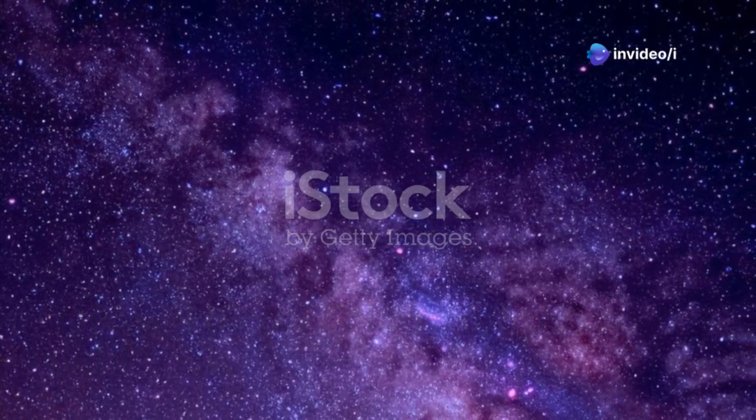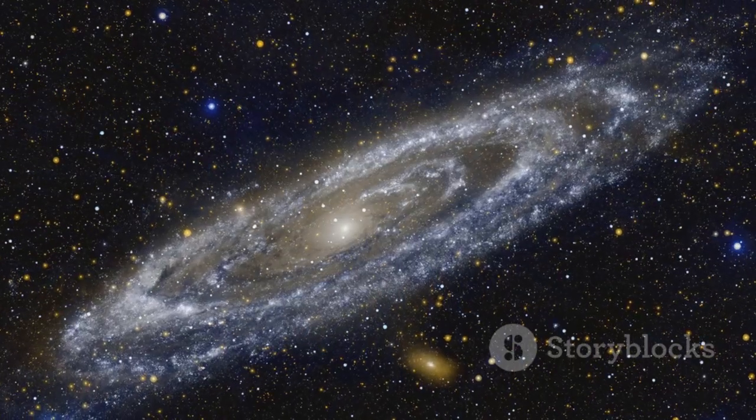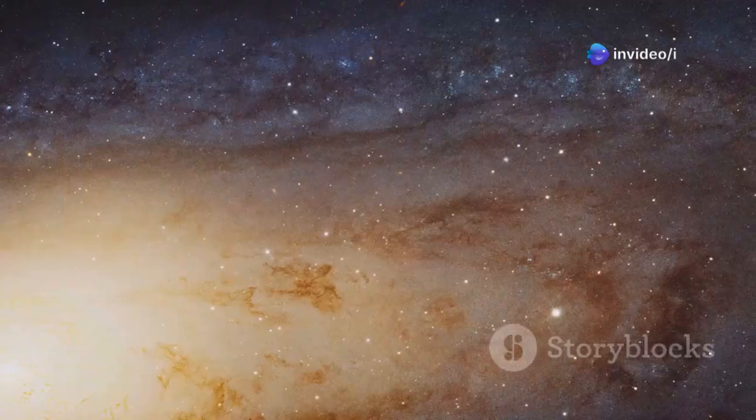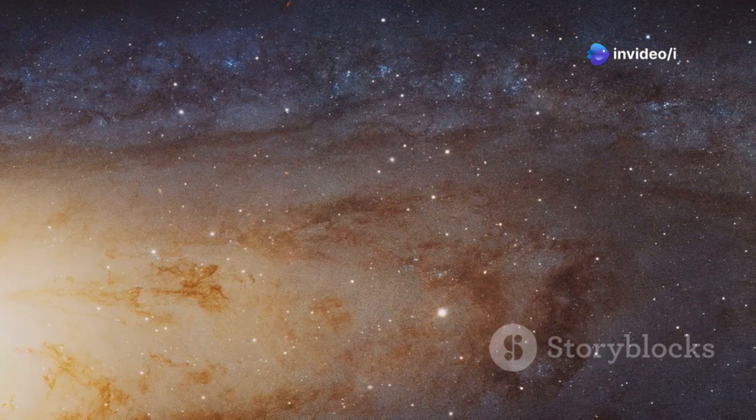Look up into the night sky on a clear dark night. You might spot a faint fuzzy patch. That smudge of light is the Andromeda galaxy, our closest major galactic neighbor. It's a staggering two and a half million light years away. The light you see from Andromeda tonight began its journey two and a half million years ago, when early humans were just starting to walk the earth.